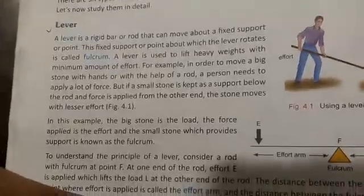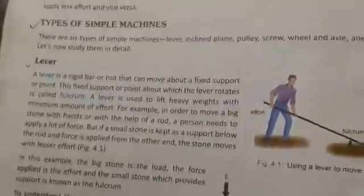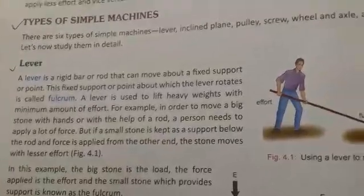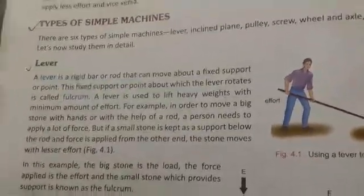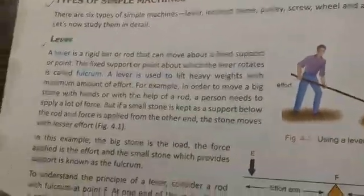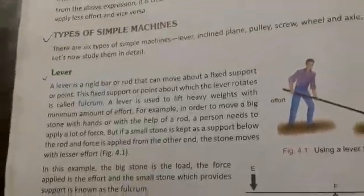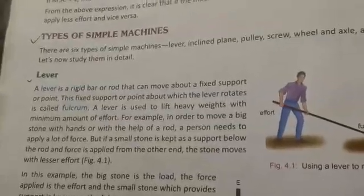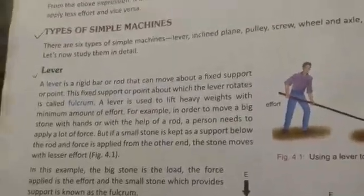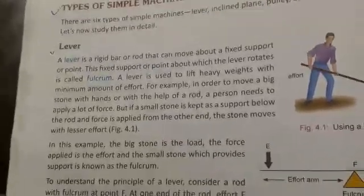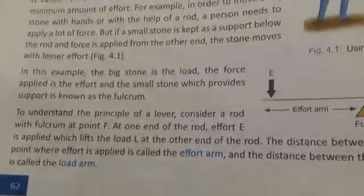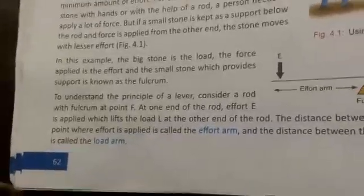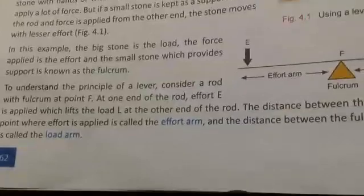First, we will see the lever. A lever is a rigid bar or rod that can move about a fixed support or point. This fixed support or point about which the lever rotates is called the fulcrum. A lever is used to lift heavy weights with a minimum amount of effort. For example, to move a big stone, if a small stone is kept as a support below a rod and force is applied from the other end, the stone moves with lesser effort. Here the big stone is the load, the force applied is the effort, and the small stone which provides support is the fulcrum.